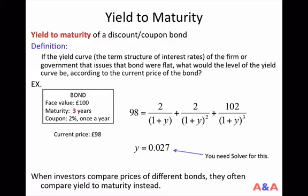That gives us the definition of yield to maturity. The yield to maturity is the answer to the following question: if the yield curve of the firm or government that issues the bond were flat, what would the level of that yield curve be, according to the current price of the bond? You establish an equation equating the current bond price to the sum of discounted future payoffs, acting as if all interest rates were the same. The solution to that equation is called the yield to maturity.